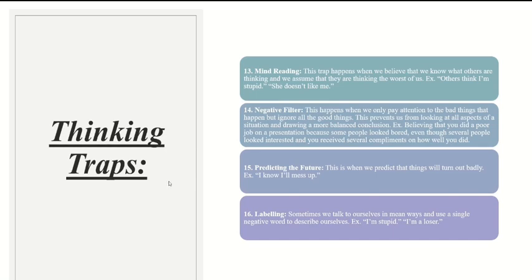Now I want to talk about thinking traps. Number thirteen is mind reading — this trap happens when we believe we know what others are thinking and assume they're thinking the worst of us. For example: 'Others think I'm stupid,' or 'She doesn't like me.' Number fourteen is negative filter — this is when we only pay attention to bad things and ignore the good, preventing us from drawing a balanced conclusion. For example, believing you did a poor job on a presentation because some people looked bored, even though others looked interested and you received compliments.